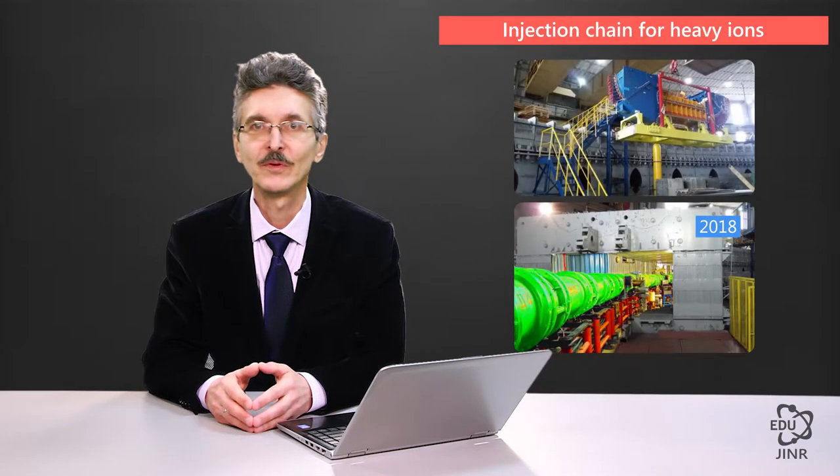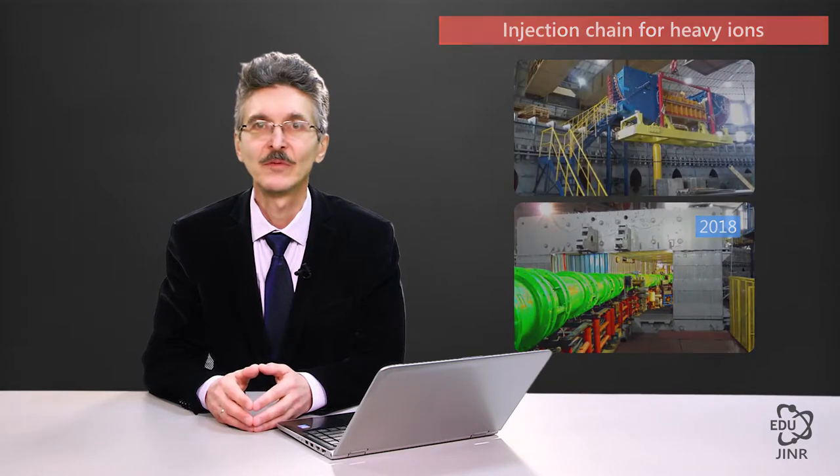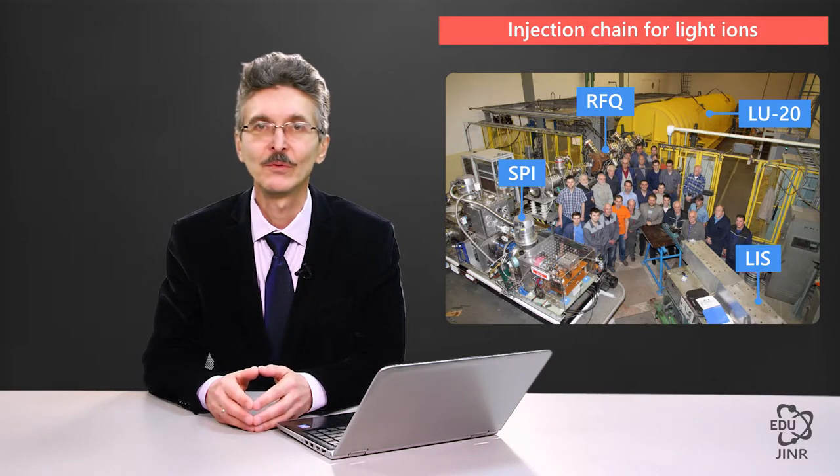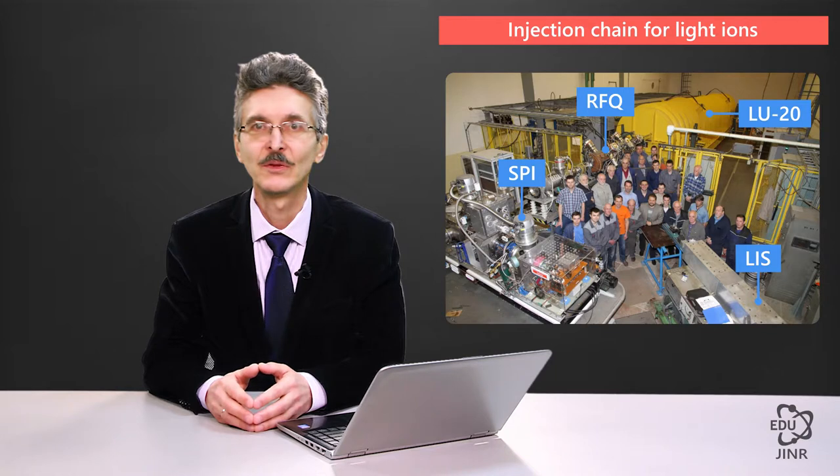I have told you about the emerging heavy ion injection chain and about the light ion injection chain. Nowadays, a light ion injection chain is used to accelerate heavy ions. However, the relation between the charge number and the mass number of the ions needs to be greater than one third. It is a rather hard task to fulfill in the source of particularly heavy ions.